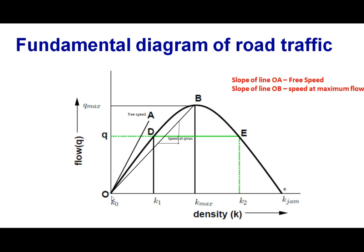This is the fundamental diagram of road traffic between flow and density. It is parabolic in nature. If you draw a tangent at the origin, the slope of line OA will give you the speed at zero flow or zero density — that is the free flow speed. At point B you get the highest flow, which we call the capacity of the highway, and the corresponding density is the optimum density k_max. If you draw a line from the origin to point B, the slope of that line gives you the speed at maximum flow.